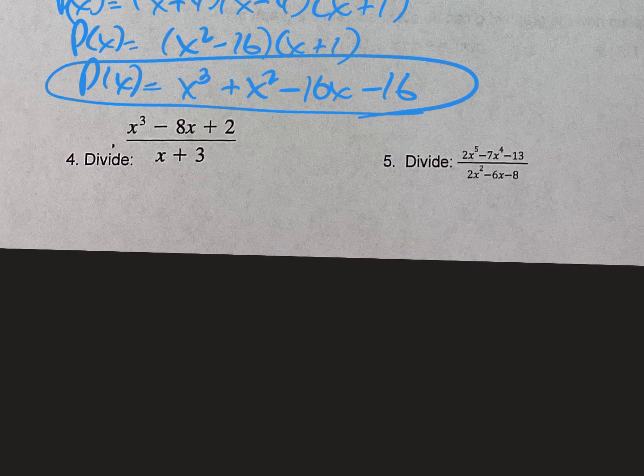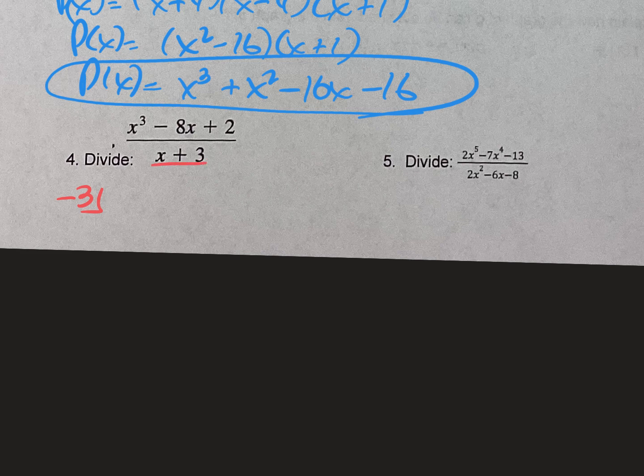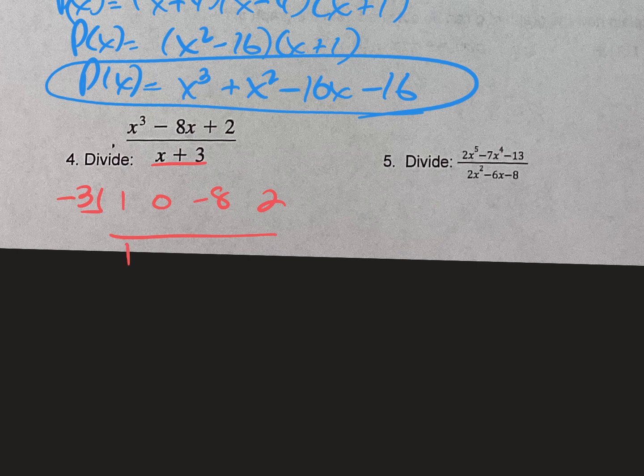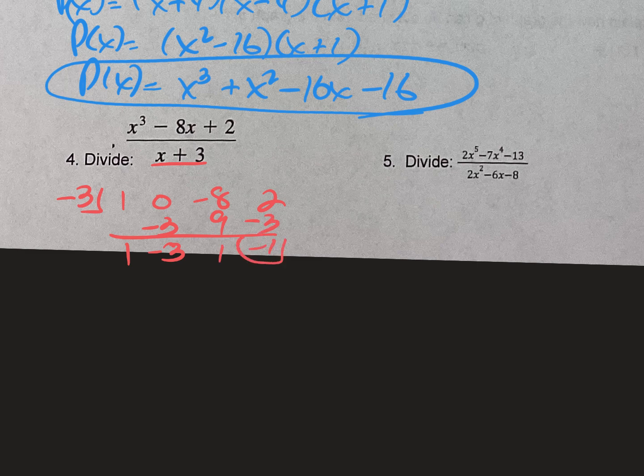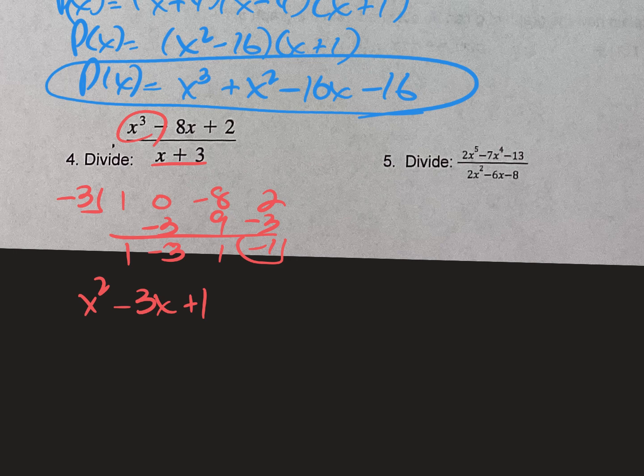4 and 5, both types of division we did this week. One's synthetic, one's long division. On the synthetic one, I'm going to put a negative 3 in the box because that's what makes that 0. Don't forget your 0 up there where the x squared would go. Bring down the 1, 1 times negative 3, add, multiply, add, multiply, boom. So my solution is going to be, because I started with x cubed, my solution is going to start with x squared. Minus 3x plus 1. That negative 1 is the remainder. Always put the remainder over the fraction of the denominator that you started with.